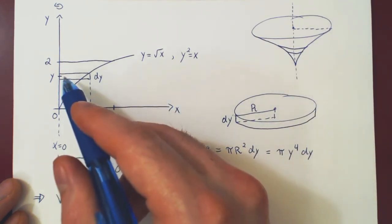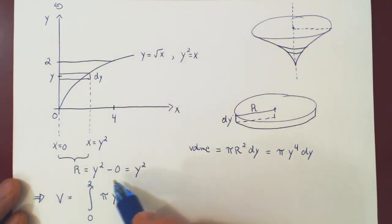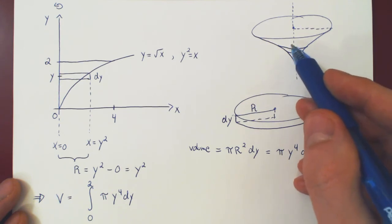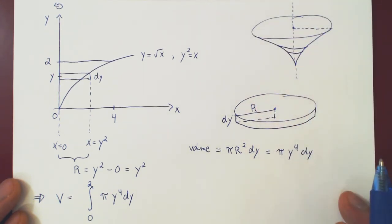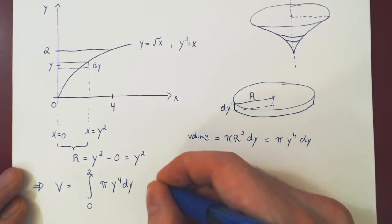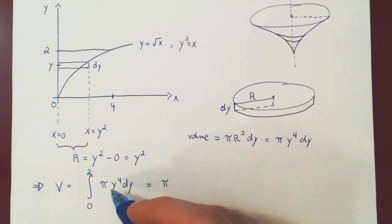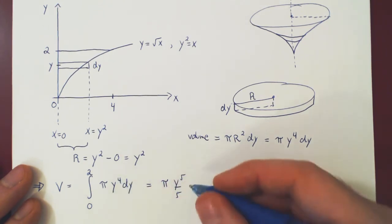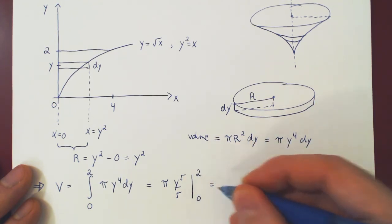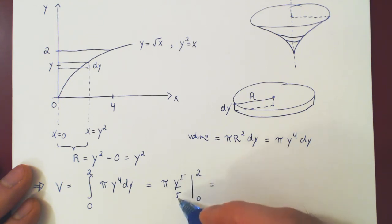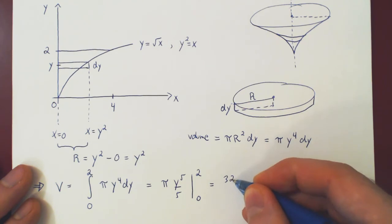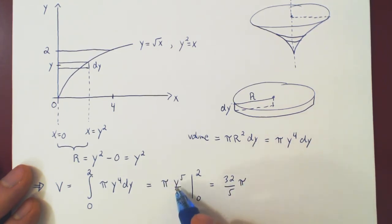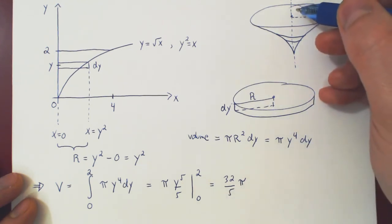This will give us the total volume of our solid. We can find this integral using the fundamental theorem of calculus — it is essentially trivial. Pi stays as a constant multiple; for y to the 4, we use the power rule to get y to the 5 over 5. Evaluating from 0 to 2: at y equals 2, we get 2 to the 5 equals 32, so 32 over 5 times pi. Subtracting the antiderivative at y equals 0 gives nothing. So the total volume of this solid of revolution is 32π/5.